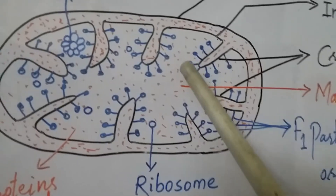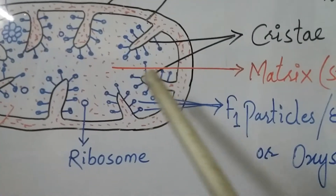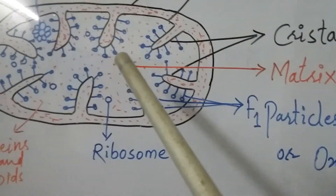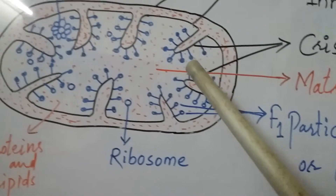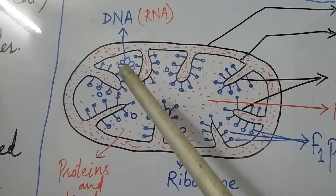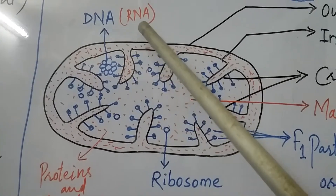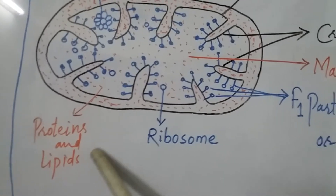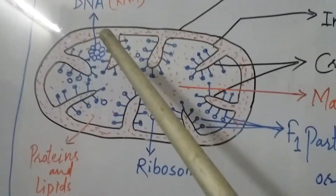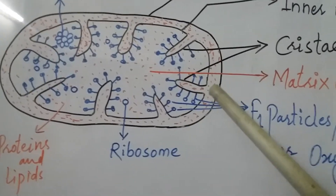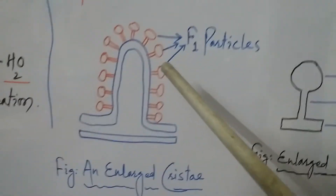Inside the mitochondria there is a colorless liquid substance called matrix or stroma. Suspended in this matrix are: one or more circular DNA molecules, RNA, proteins and enzymes, lipids, and 70S type ribosomes. All these components are present in the colorless liquid known as matrix.